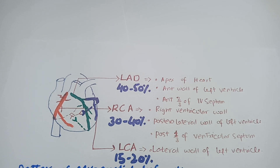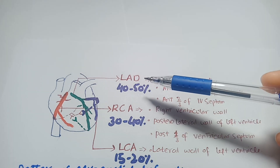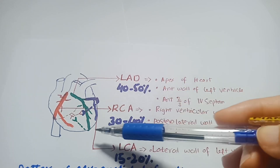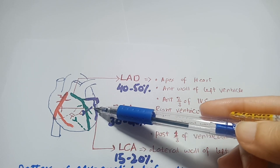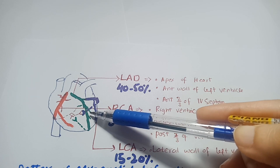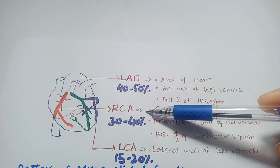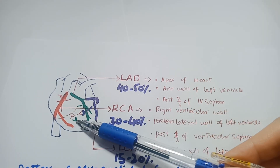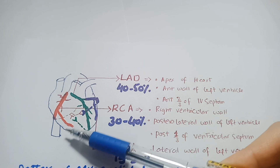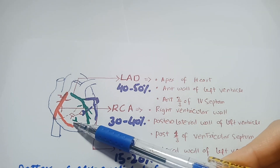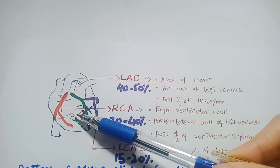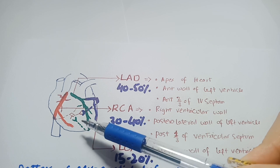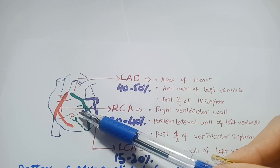Three vessels are involved during myocardial infarction. The left anterior descending artery is involved in 40–50% of cases, supplying the apex of the heart, anterior left ventricular wall, and anterior two-thirds of the interventricular septum. The right coronary artery is involved in 30–40% of cases, supplying both anterior and posterior surfaces of the right ventricular wall, posterior surface of the left ventricular wall, and posterior interventricular septum — making it dominant, representing right heart dominance.